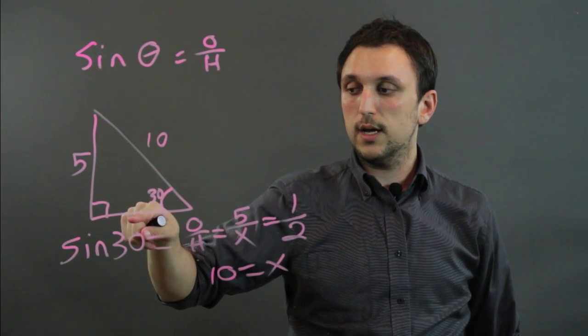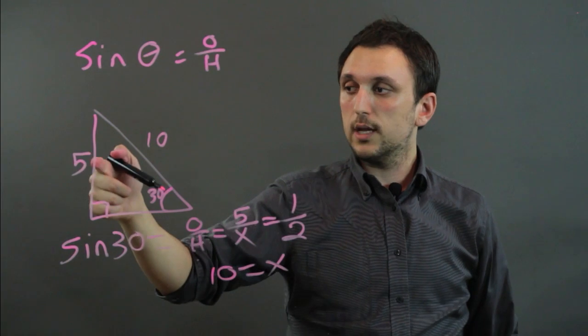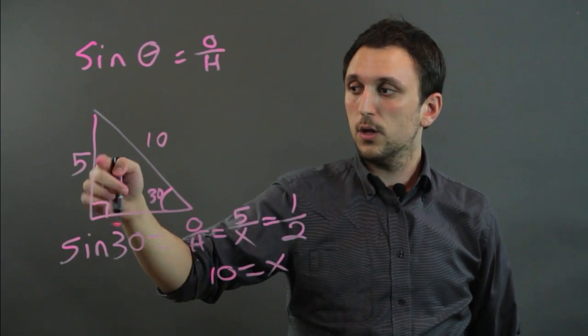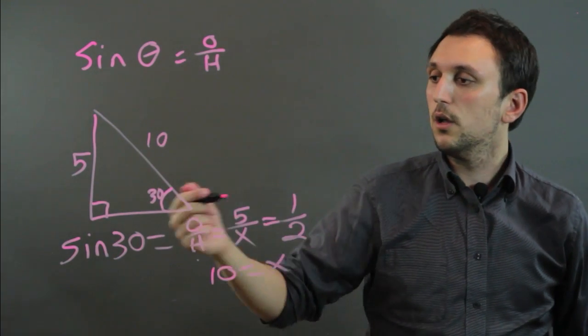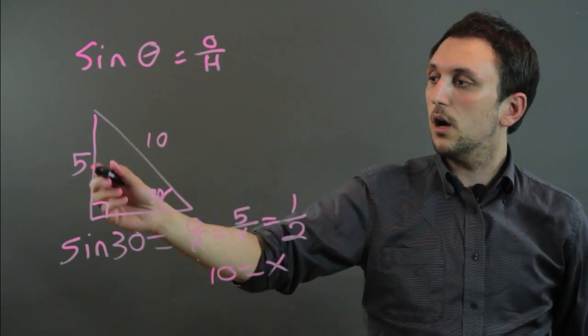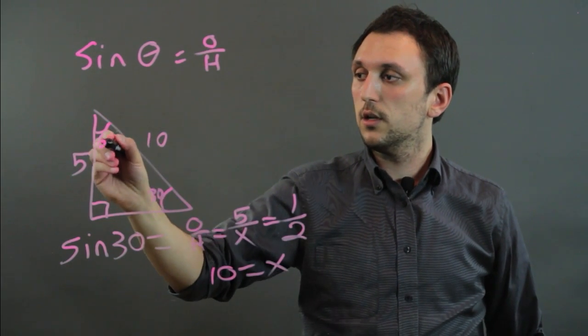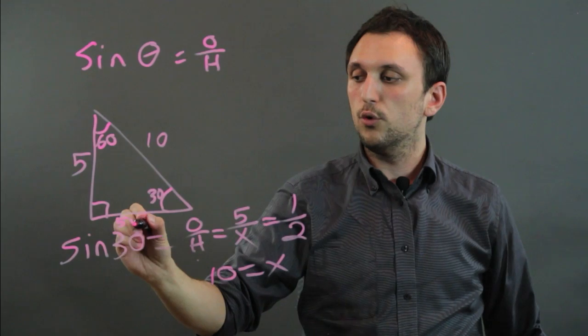So if we wanted to then find this side here we can basically do the Pythagorean theorem which is 5 squared plus b squared equals 10 squared so that would be essentially if this is 60 this would be 5 root 3.